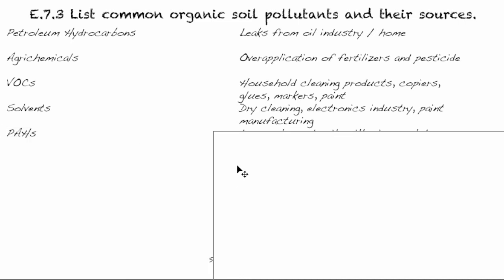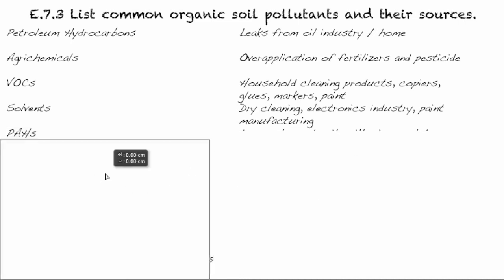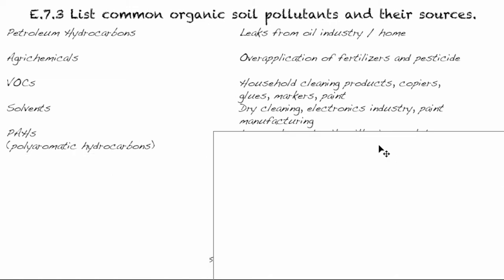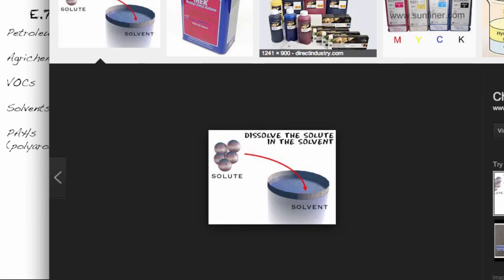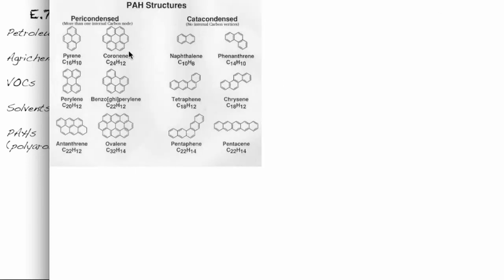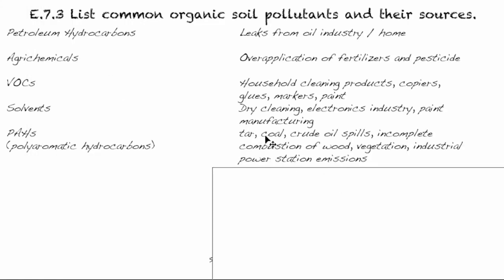PAHs stands for poly aromatic hydrocarbons. Poly means many, aromatic means it has ring structures, and they're all made of carbon and hydrogen — so they're hydrocarbons. Sources include tar, coal, crude oil spills, incomplete combustion of wood, vegetation, and industrial power station emissions.